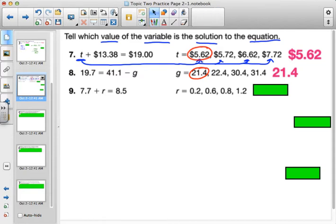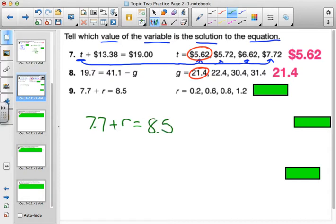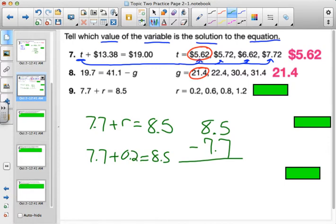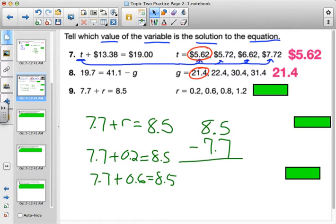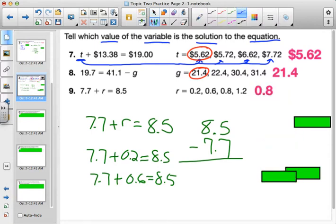Number 9. They want to know 7.7 plus R equals 8.5. Again, you could use the inverse operation and subtract and get your answer right away. Or, you could have plugged in using a calculator the many different values in the set. And you could have easily tested any one of those with a calculator to see if they were true. The correct answer is 0.8. So, you should have circled 8 tenths.